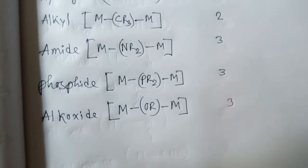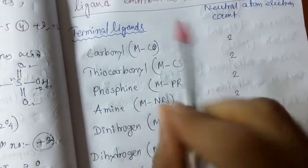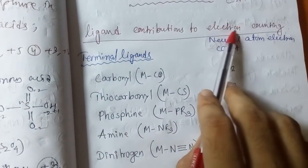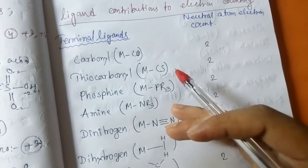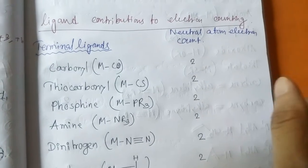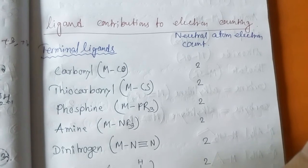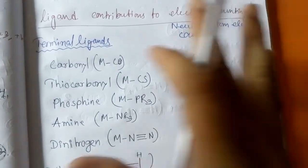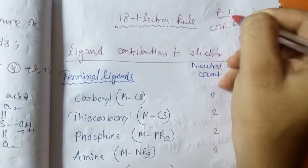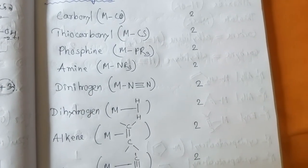Bridging alkoxide is three. So this covers the 18-electron rule and ligand contribution to electron counting using the neutral atom method, which is very easy. You have to memorize this. This is Part 1. Next I will discuss how to apply it and work through some previous year exam questions. Thank you, please subscribe to my channel and share with your friends.